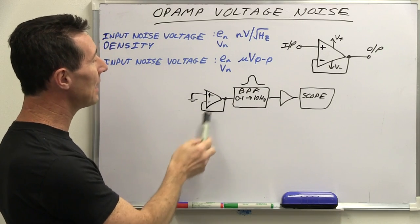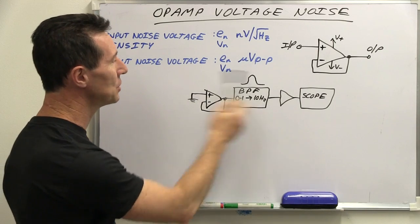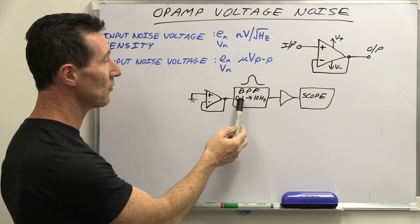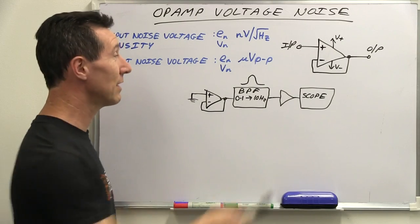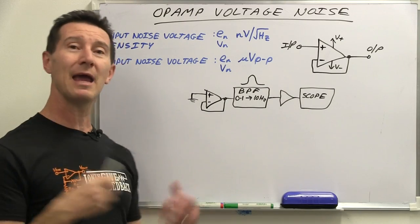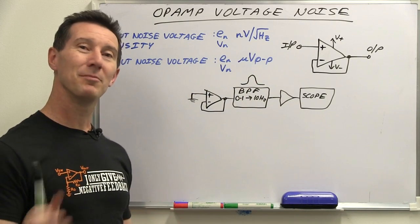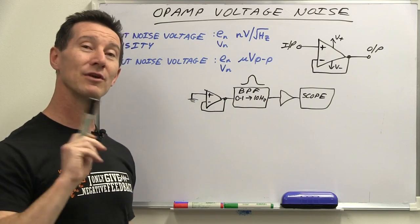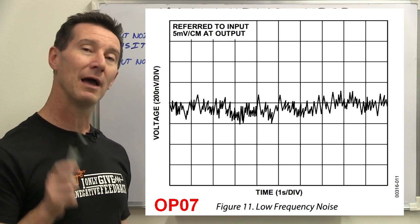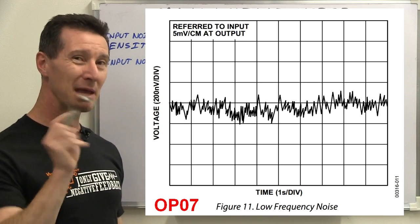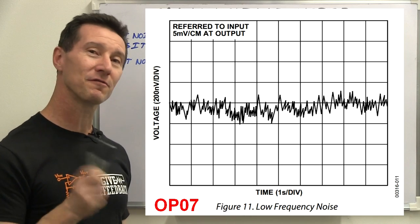They've got the op-amp here — it may or may not have some gain. The input will be grounded, it'll all be shielded, of course. Then we'll have a bandpass filter of 0.1 Hz to 10 Hz. We'll have some more gain in there because we're talking about low signal levels. That'll go into a scope and they can measure that value. They'll give you a peak-to-peak or a maximum peak-to-peak signal, and in most data sheets they'll also give you a typical waveform as well — once again bandwidth limited to 0.1 to 10 Hz. Very limited frequency range.